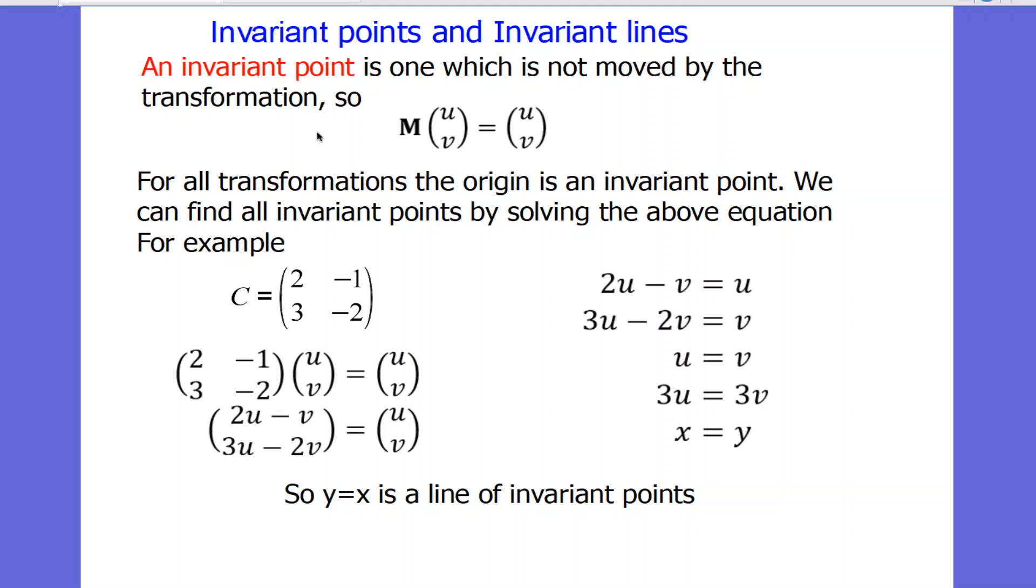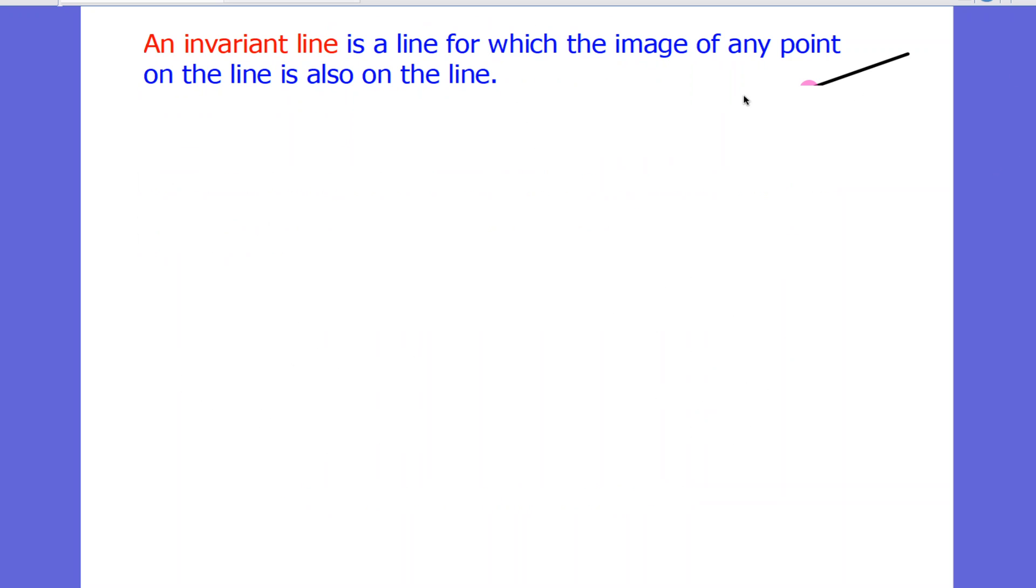So we not only have invariant points, but we have a whole line of them. This is called a line of invariant points, which is not the same as what we're going to look at next, which is an invariant line.